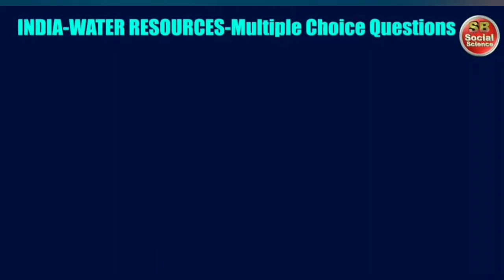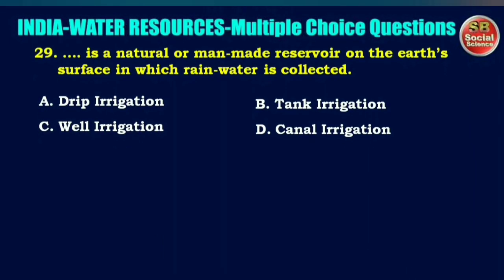A natural or man-made reservoir on the earth's surface in which rainwater is collected is called — options are drip irrigation, tank irrigation, well irrigation, or canal irrigation. The right answer is option B: tank irrigation.